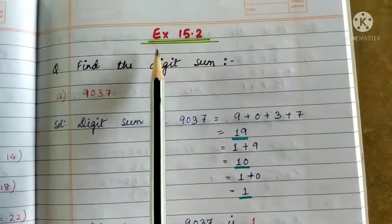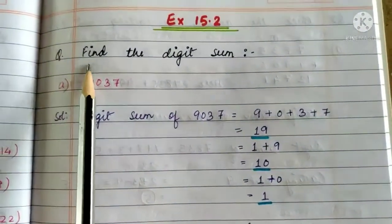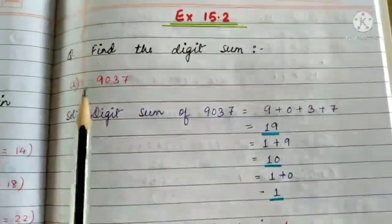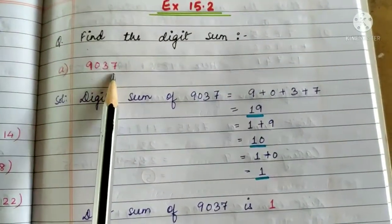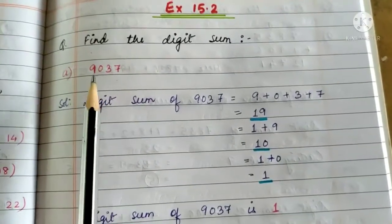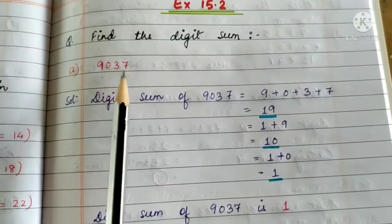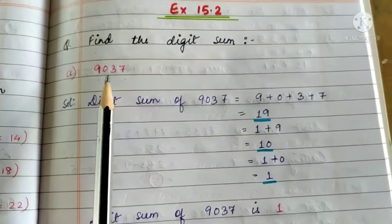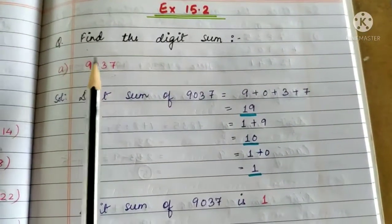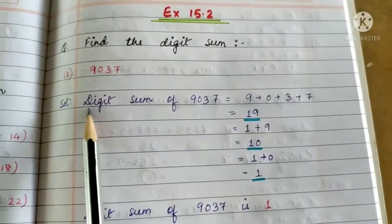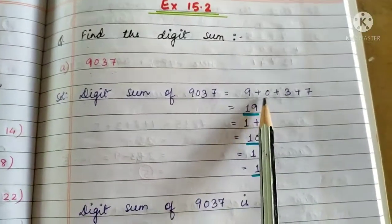Dear students, now let us move on to Exercise 15.2. The first question is find the digit sum. Children, to find out the digit sum, we add the individual digits. This is a number, 9037. A number is made up of digits. Digits ko mila kar ek number banta hai, toh digit sum nikalne ke liye hume is number ke digits ko alag-alag add karna hoga.